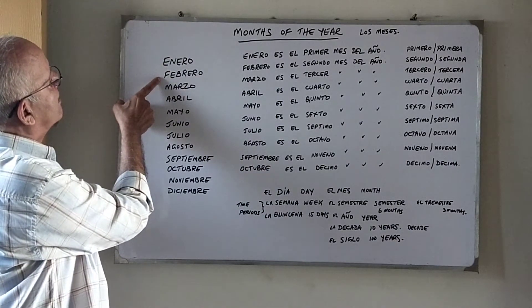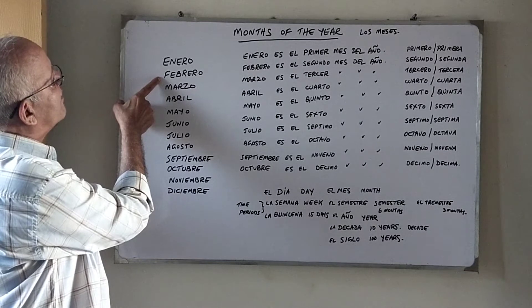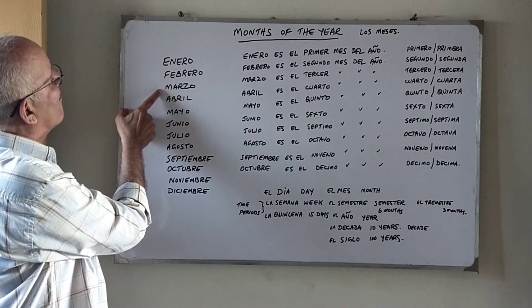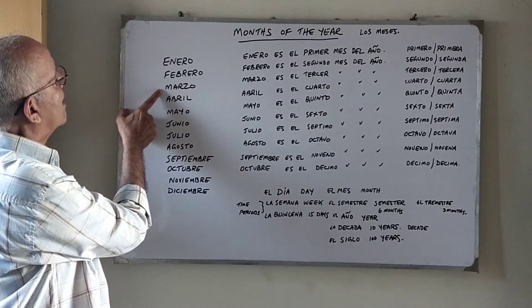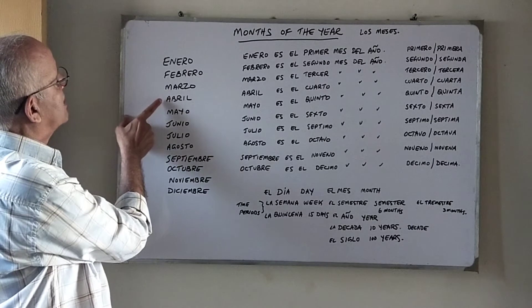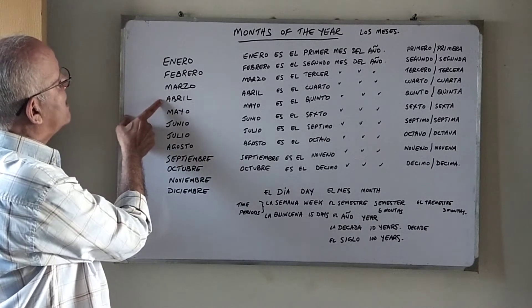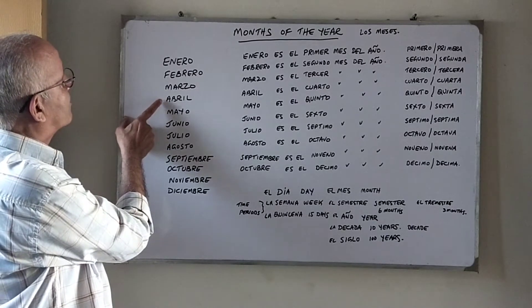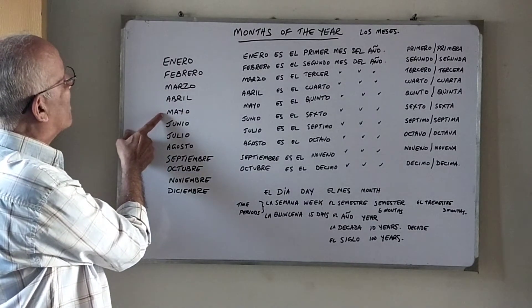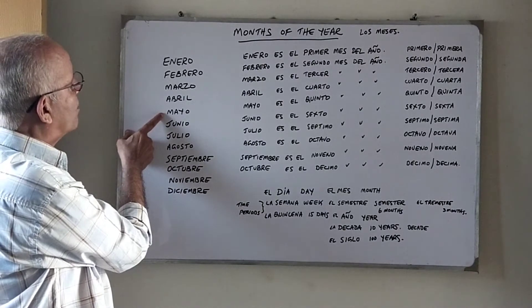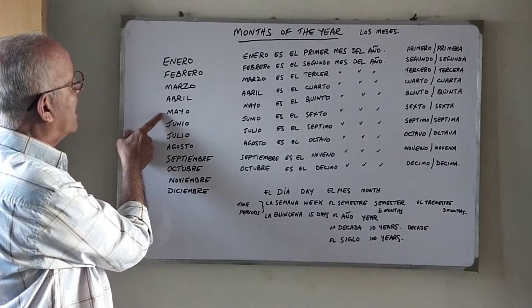Febrero, Febrero — February. Marzo, Marzo — March. Abril — April. Mayo, Mayo — May.